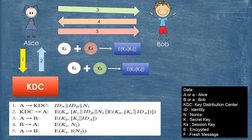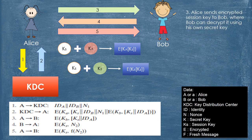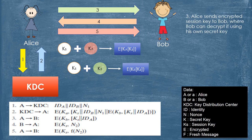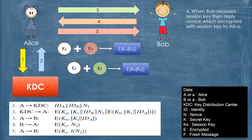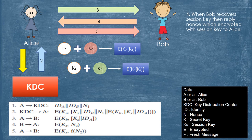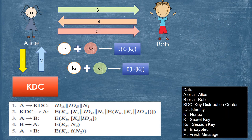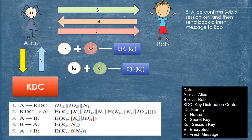Step 3: Alice sends the encrypted Session Key to Bob, where Bob can decrypt it using his own Secret Key. Step 4: When Bob recovers the Session Key, he replies with a nonce encrypted with the Session Key to Alice. Step 5: Alice confirms Bob's Session Key and then sends back a fresh message to Bob.